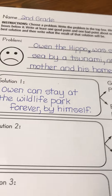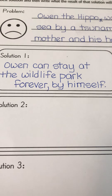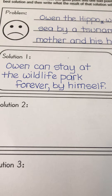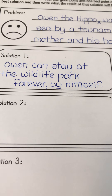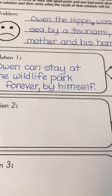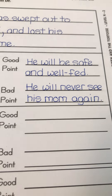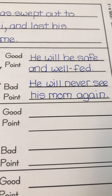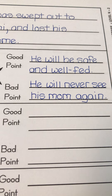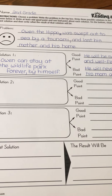I have one example that I wrote for you up here. We know that after the tsunami, Owen ended up at a wildlife park. One possible solution is that Owen can stay at the wildlife park forever by himself. A good point about this solution is that he will always be safe and well-fed. A bad point is that he will never see his mom again and he might be lonely. Alright second graders, are you ready to give it a try? Good luck!